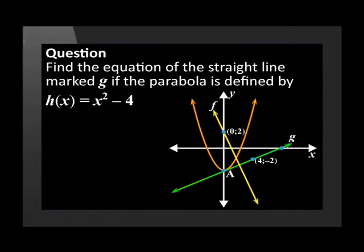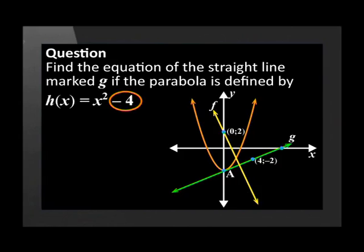Step 2: the next step is to check if a or q is given. Remember that q represents the y-intercept of a straight line. The y-intercept is indicated — can you see a way to find it? The y-intercept of the linear function is at the same point as the y-intercept of the quadratic function. The equation of the quadratic function is given, which means it will be easy to find the y-intercept. The q value of h of x is negative 4, which means that the coordinates of point A are (0, −4). This means that the q value of the linear function g is also negative 4.